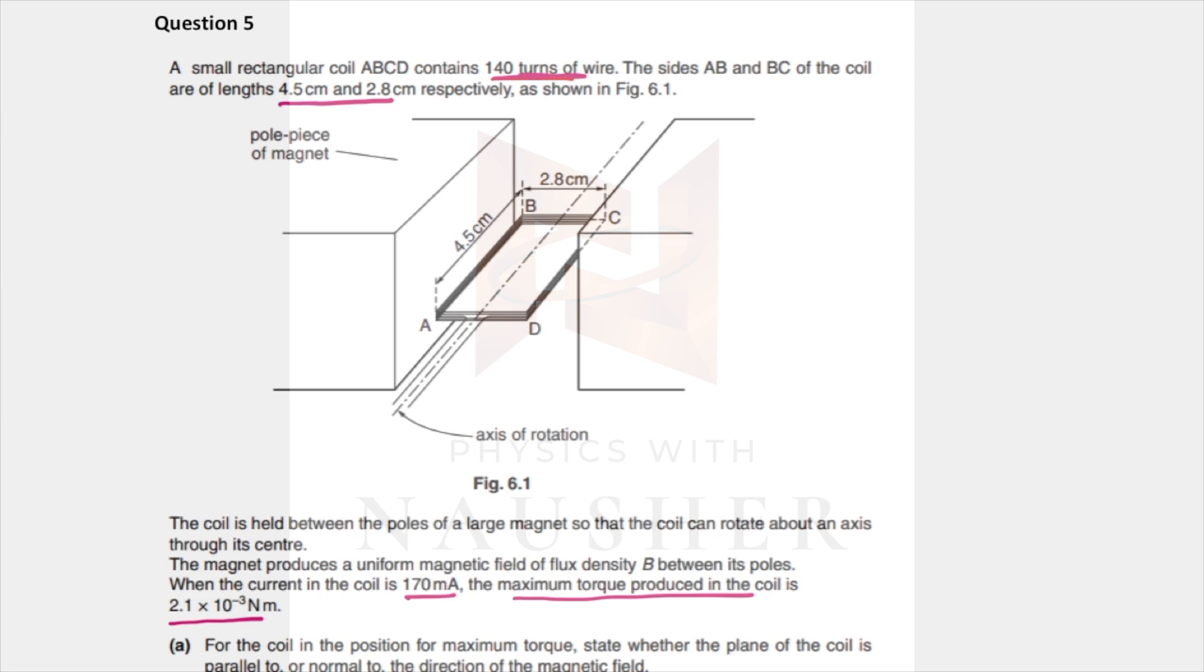You know that the torque will cause this rectangular coil to spin. The forces are in this direction, and these are forces which are equal and opposite, so they constitute a couple. You know that the moment due to a couple is always any single force times the perpendicular distance between the forces.